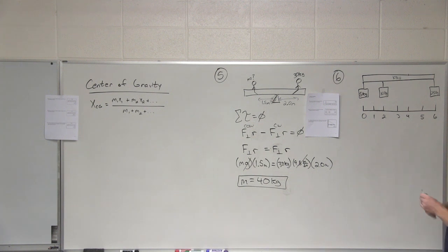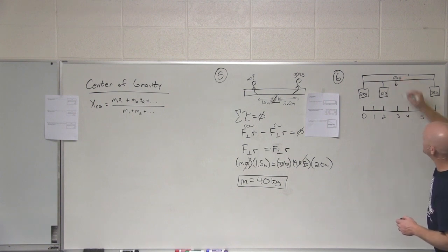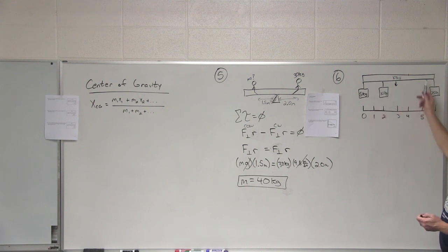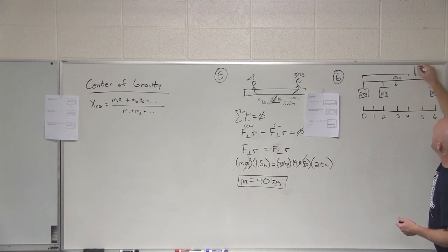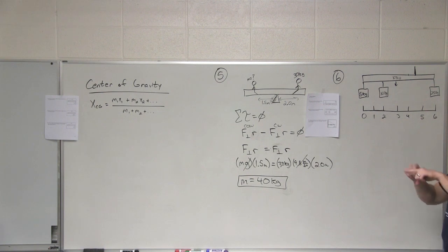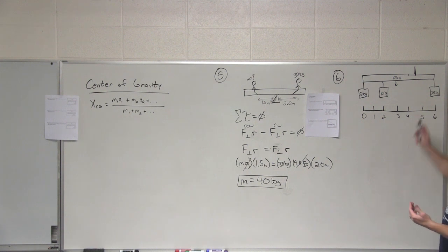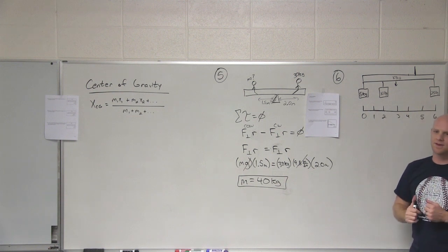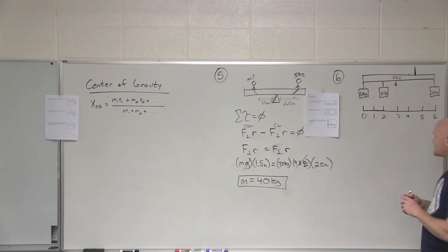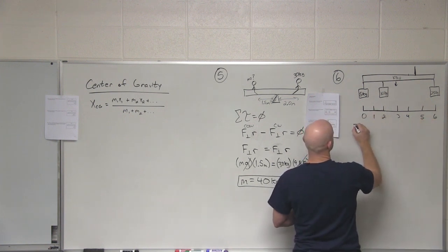We also need to factor in the board itself — the 10-kilogram board's mass is concentrated at its center, position three. Combining all the masses, it's probably somewhere around 4.5. If we hung it by a rope at the center of gravity, it won't rotate. We can look at this as a torque problem where the sum of torques equals zero, or as a center of gravity problem. We'll do both.